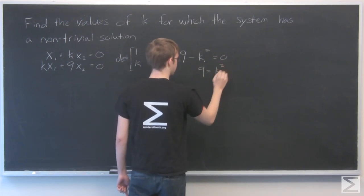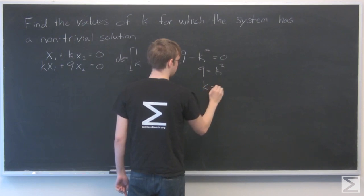We get 9 equals k squared, or k equals plus or minus 3.